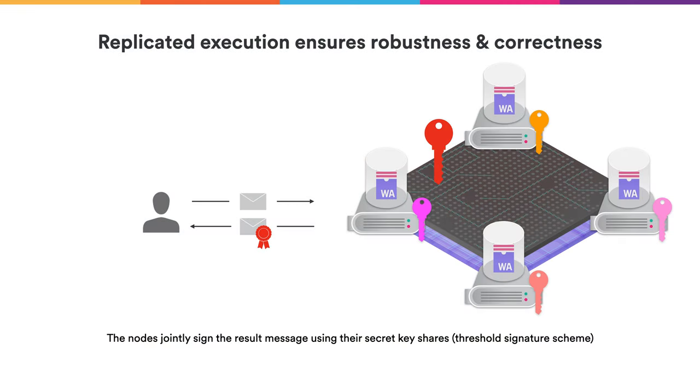This is one of the very cool features of chain key technology: with a single public key you can validate the responses and computation of the Internet Computer. All you need is a single 48-byte value — the public key of the Internet Computer — and with that you can verify the correctness.